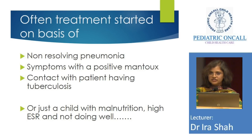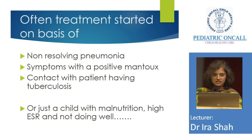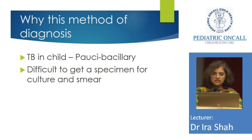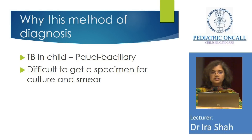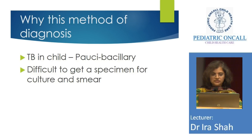A lot of us have done that — started treatment based on these criteria. Why did we do that? Because it's difficult to get cultures or GeneXpert done in children. It's paucibacillary, and it's very difficult to get a yield in these patients.